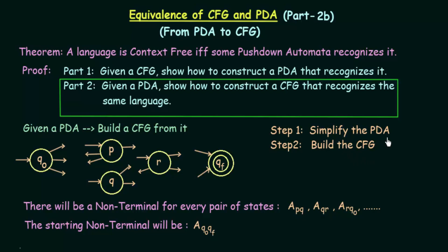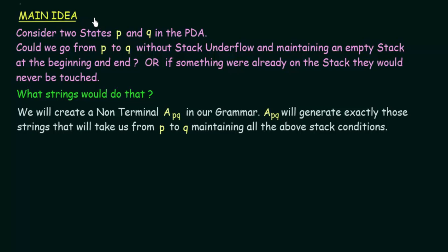After simplifying the PDA, the next step is to build the context free grammar from it. The main idea is to consider two states P and Q in the pushdown automata. For every pair of states in our PDA, we will have a non-terminal in our context free grammar.